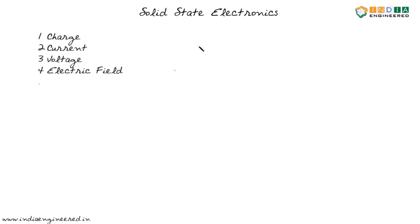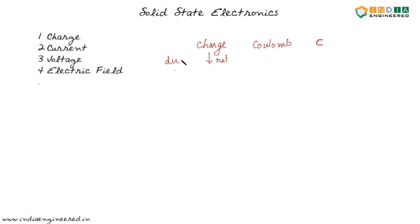Let us summarize what we have already learned. We talked about charge, and said that its unit is Coulomb, which we denote by C. Then we said that if there is a net directional movement of charges through a material, we can say that there is some current flow. The unit of current is ampere, and we denote it by A.